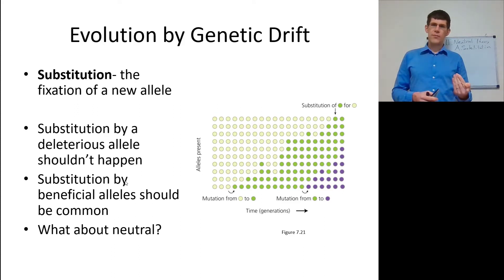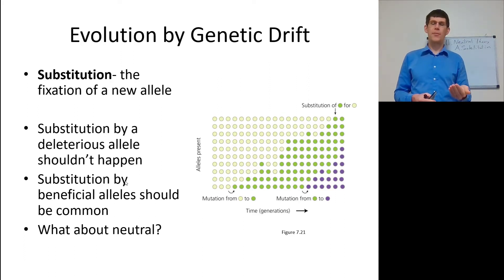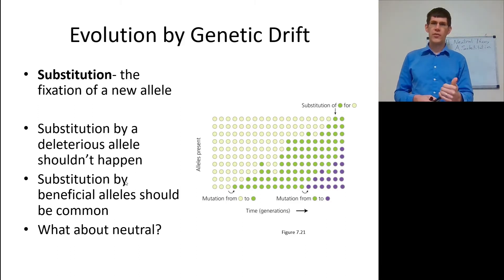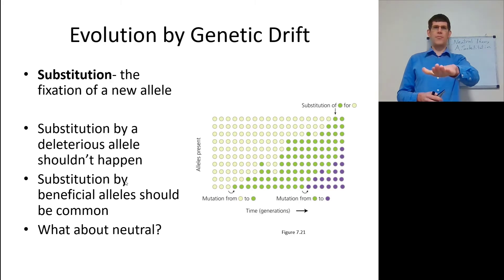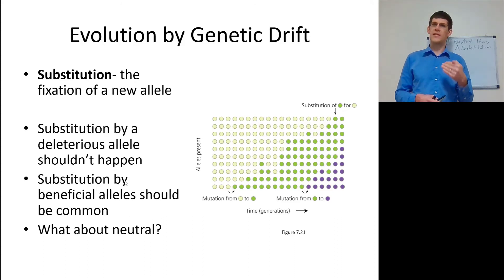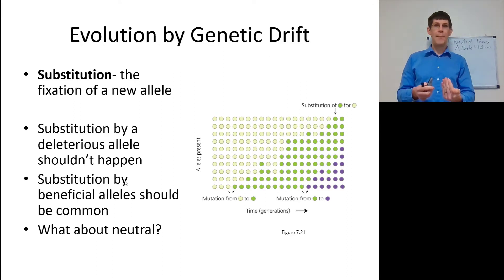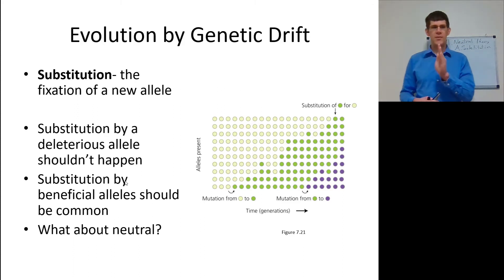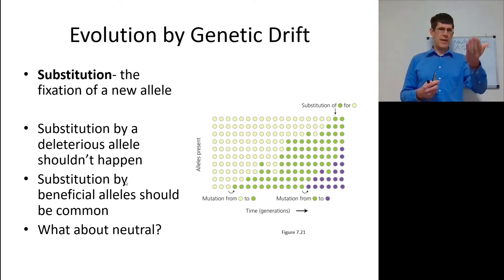A deleterious allele, if it substitutes in, means the whole population will have lower fitness. A lethal allele cannot substitute — substituting a lethal allele in implies the entire population is dead. A deleterious allele shouldn't substitute but sometimes does in an inbred population. Substitution by beneficial alleles? Yes — we should expect to see a beneficial allele go to fixation pretty rapidly because they have higher fitness.